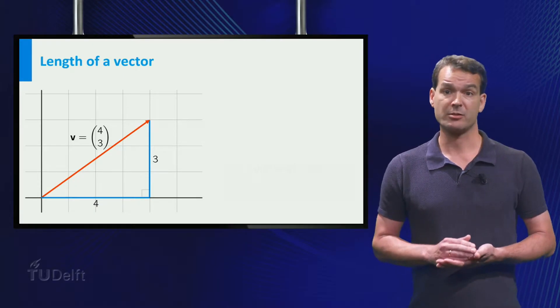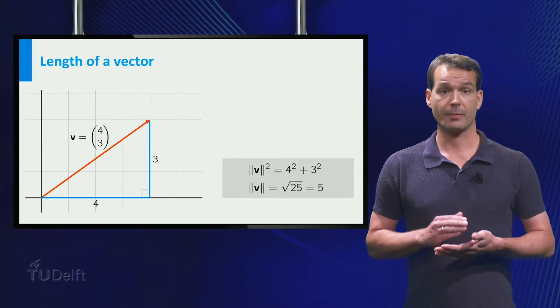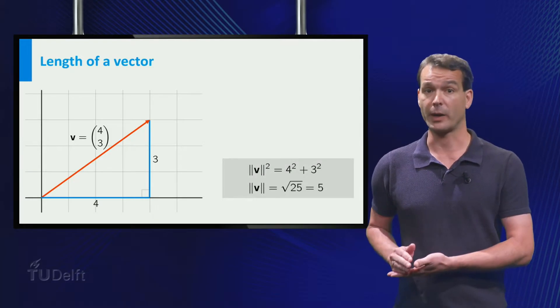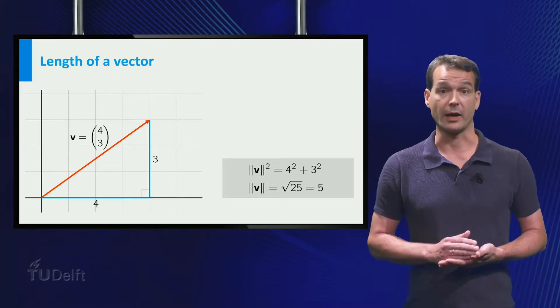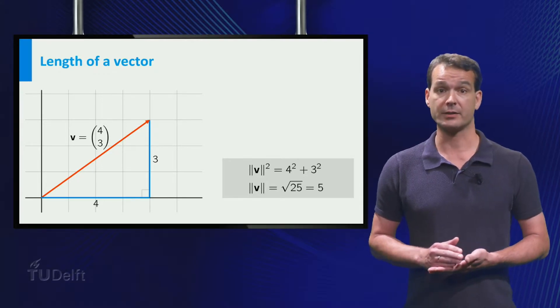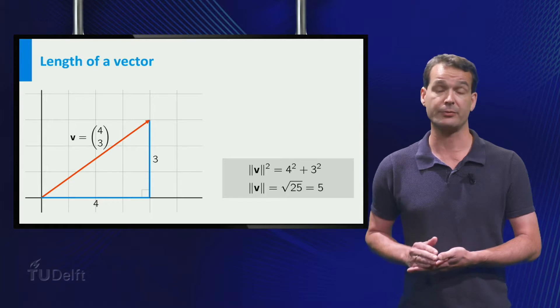Then the length squared of the vector is 4 squared plus 3 squared, which equals 25. So the length of the vector is the square root of 25, which is 5.